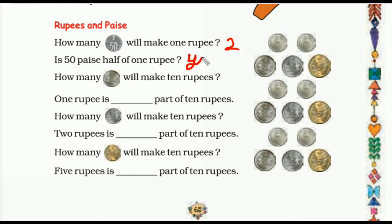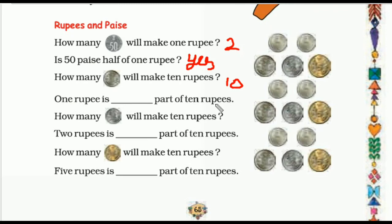These questions are so easy, children. Now how many one rupee coins will make ten rupees? Ten one-rupee coins will make ten rupees, so the answer is ten. Ten one-rupee coins will make ten rupees. Then one rupee is what part of ten rupees? One rupee is one tenth part of ten rupees.